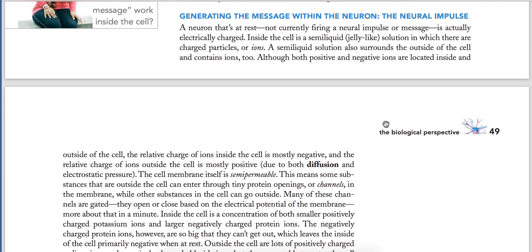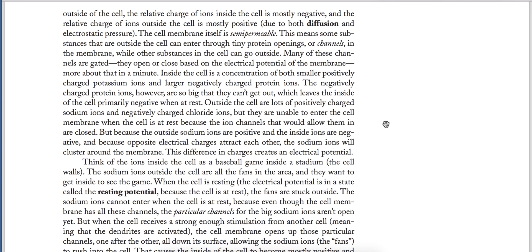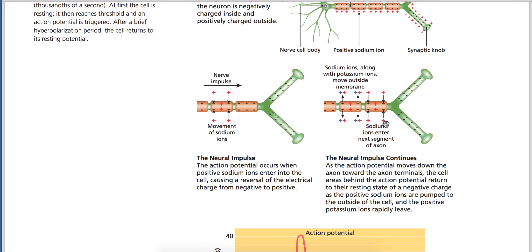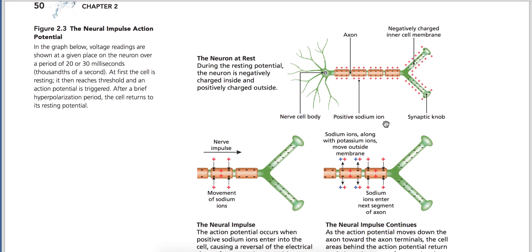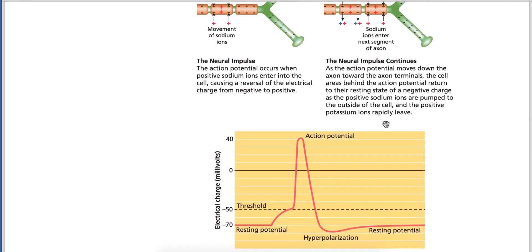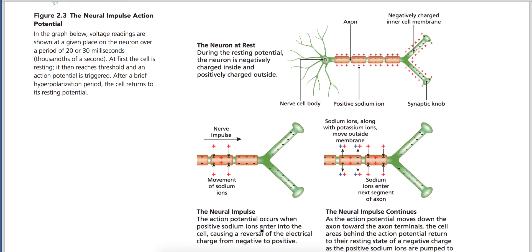Next, when a message is transmitted from one neuron to another, how does it actually happen? We use the term 'action potential' for this. When the neuron is in resting position, there are negative charges inside it and positive charges outside. This is the resting state. When a signal comes, what happens?